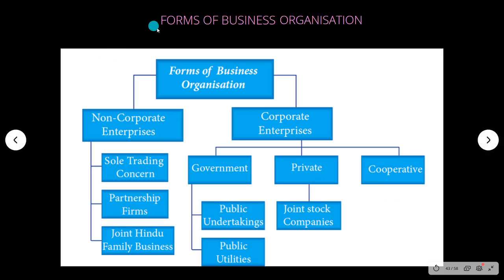Welcome to commerce class. In today's class we are going to learn about the forms of business organization. They can be divided into two different categories: one is non-corporate enterprise and another is corporate enterprise. Under non-corporate enterprise we have sole trading concern, partnership firm, and joint Hindu family business. Under corporate enterprise we have government, private, and cooperatives, which is subdivided into public undertaking and public utilities.